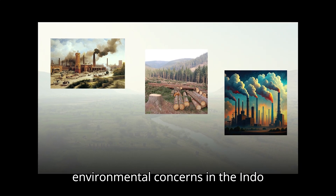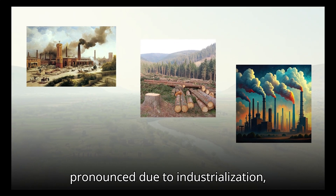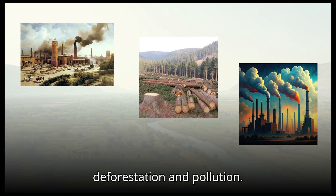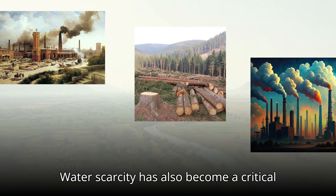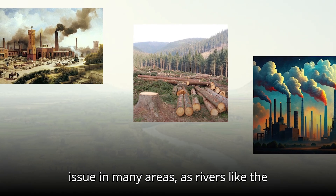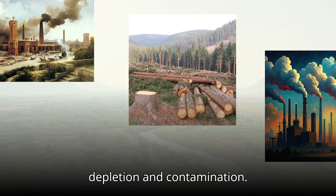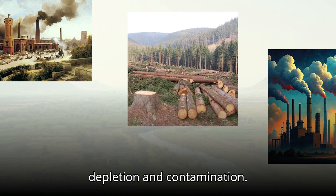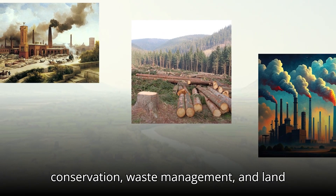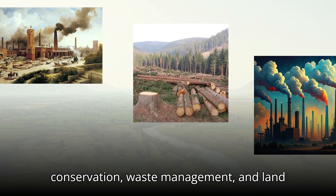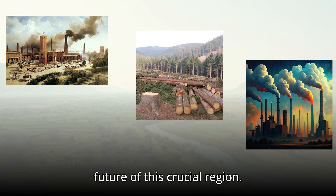Environmental concerns in the Indo-Gangetic Plains are becoming more pronounced due to industrialization, deforestation, and pollution. Water scarcity has also become a critical issue in many areas, as rivers like the Yamuna and Ganges are facing rapid depletion and contamination. Sustainable practices for water conservation, waste management, and land use planning are essential to protect the future of this crucial region.